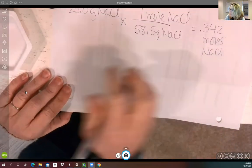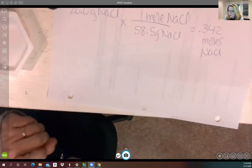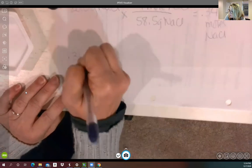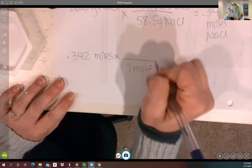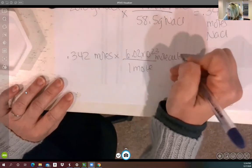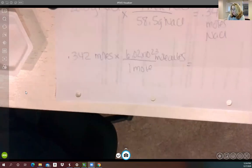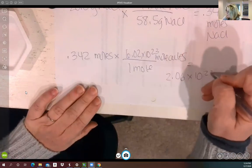So if I don't have a whole mole, I don't have 6.02 times 10 to the 23rd molecules of salt. How many molecules of salt do I have? Well, 0.342 moles. And if I had one mole, I would have 6.02 times 10 to the 23rd molecules. So plugging that into my phone or your calculator, either will work. So let me see. Clear 0.342 times 6.02 times 10 to the 23rd equals 2.06 times 10 to the 23rd.